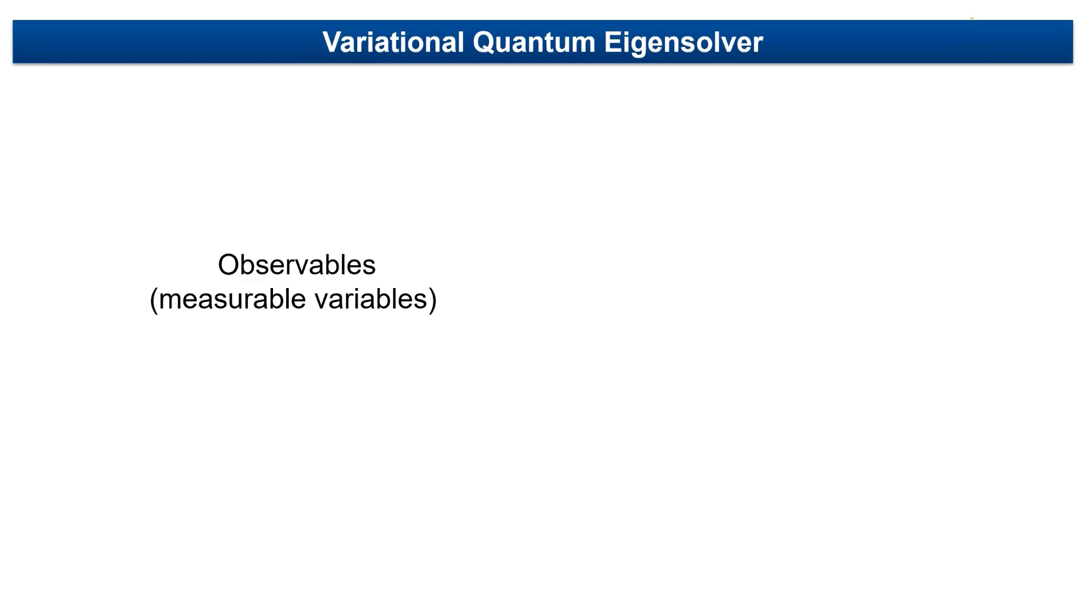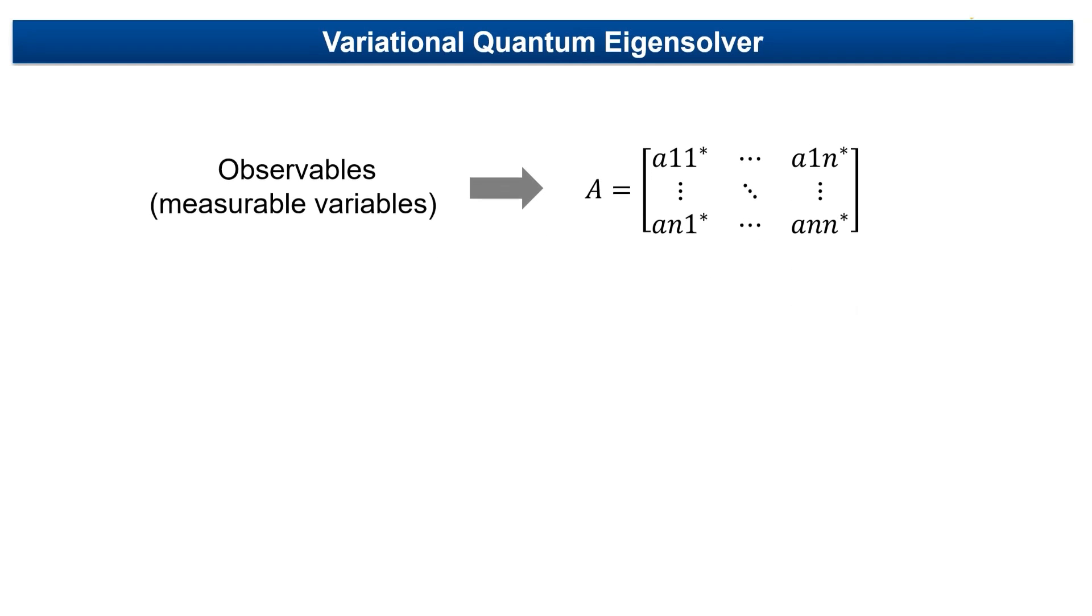Any variable in quantum mechanics which can be measured is called an observable. Observables can be mathematically represented as a matrix in quantum mechanics.